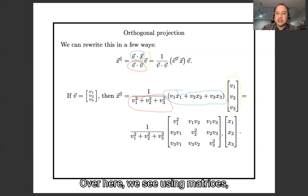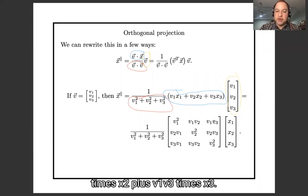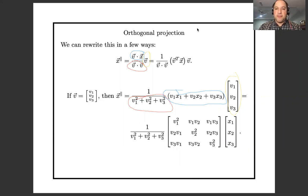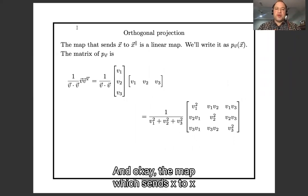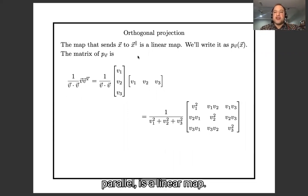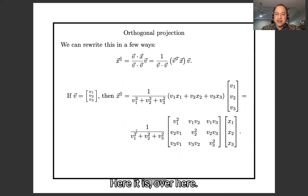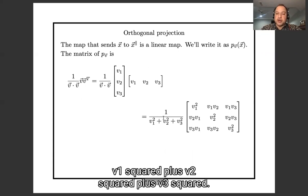Here is the vector V, and I've rewritten the formula yet one more time using matrices. The first entry is v1² times x1 plus v1·v2 times x2 plus v1·v3 times x3, which is exactly what you get if you multiply out this scalar by the first entry of the vector. The map which sends X to X-parallel is a linear map — it can be given as a matrix. That matrix is: entries v1², v1·v2, v1·v3, etc., times 1 over (v1² + v2² + v3²).